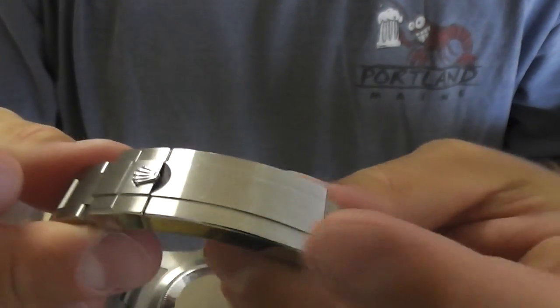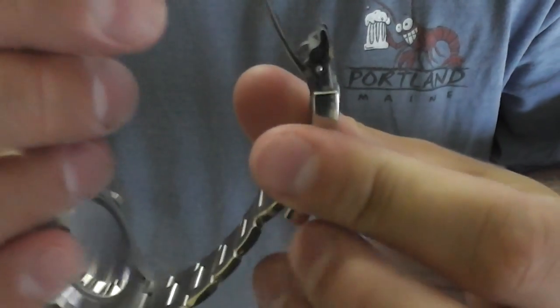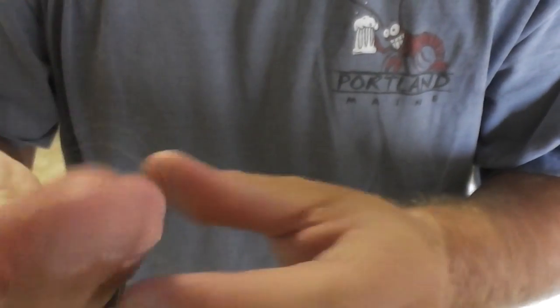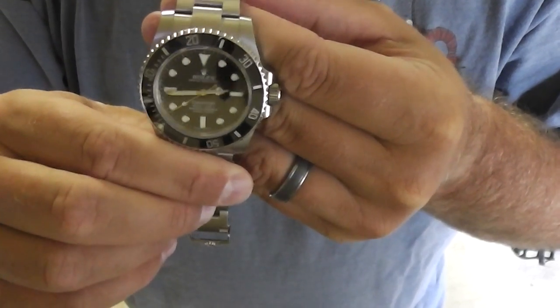Now there it is closed. So what I'm going to do is demonstrate how to use the Glidelock. So obviously you open your deployment clasp and then when you look inside here, and this of course is the most current model Submariner, it's the non-date ceramic.